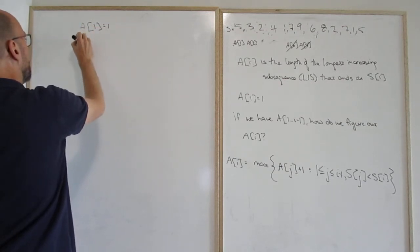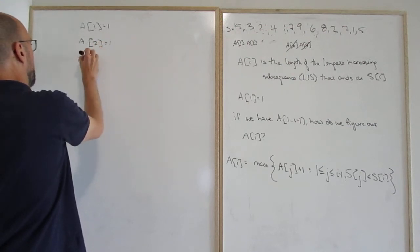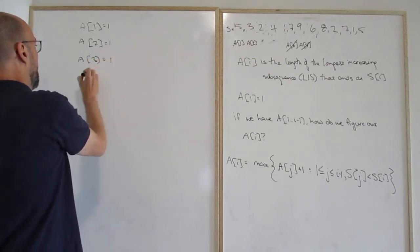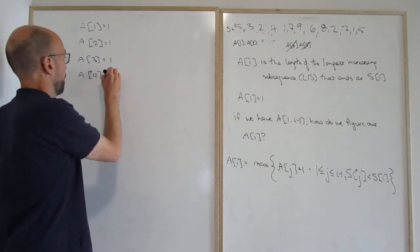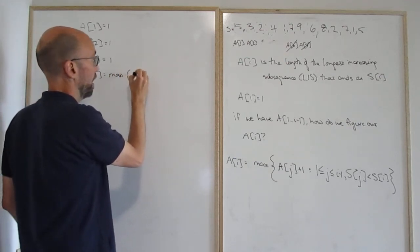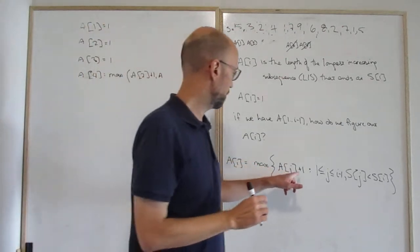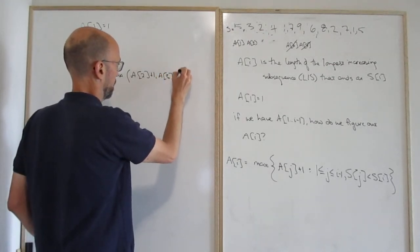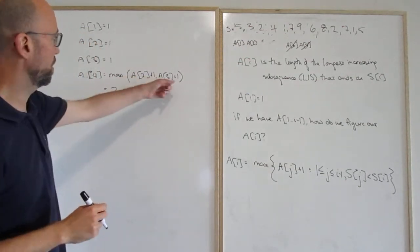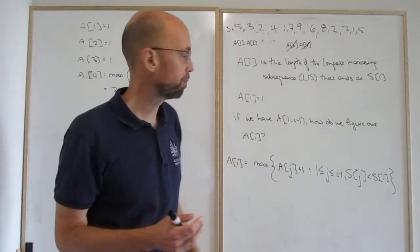So a_1 equals 1. a_2: there's nothing before it to append to, so a_2 equals 1. a_3: nothing to append to, so a_3 equals 1. a_4 equals max(a_2 + 1, a_3 + 1), which is 2, because a_2 = 1 and a_3 = 1. The longest subsequence ending with this four could be 3,4 or 2,4 — it doesn't matter.